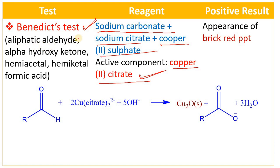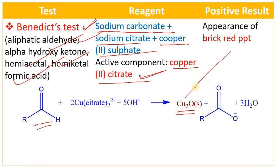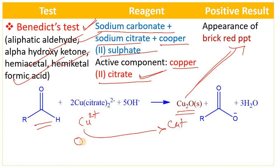Benedict's test is also used for the identification of aliphatic aldehydes, alpha-hydroxy ketones, hemiacetals, hemiketals, and formic acid — the mechanism is similar. When aldehyde is treated with Benedict's reagent, that is copper citrate [Cu-citrate]²⁻ in basic conditions, there is formation of cuprous oxide as a brick red precipitate. Cu²⁺ is reduced to Cu⁺, acting as an oxidizing agent that oxidizes aldehydes into carboxylic acids. This concludes the identification of carbonyl compounds; in the coming video I will explain identification of carboxylic acids and amines.